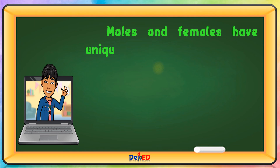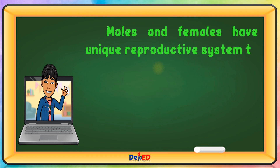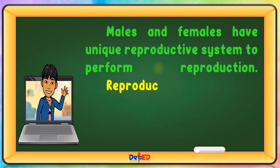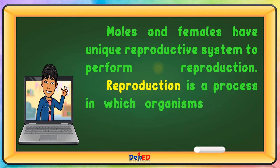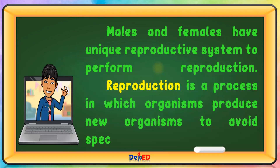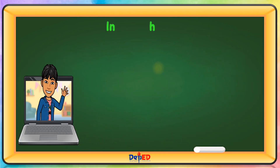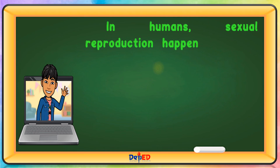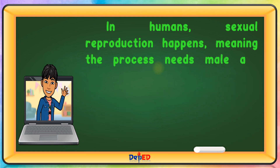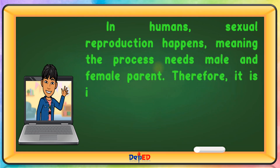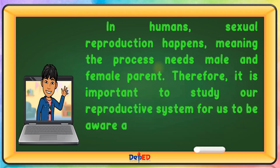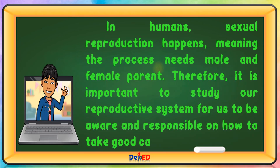Males and females have unique reproductive systems to perform reproduction. Reproduction is a process in which organisms produce new organisms to avoid species extinction. In humans, sexual reproduction happens, meaning the process needs a male and female parent. Therefore, it is important to study our reproductive system for us to be aware and responsible on how to take good care of it.